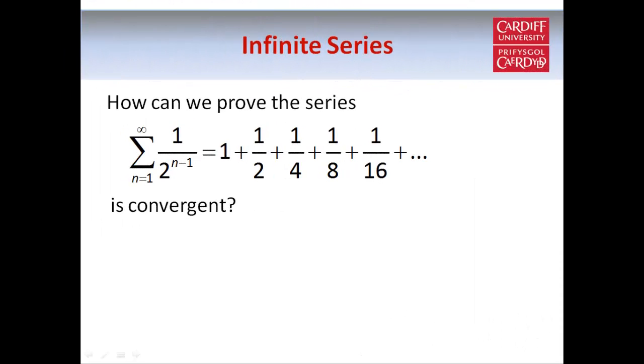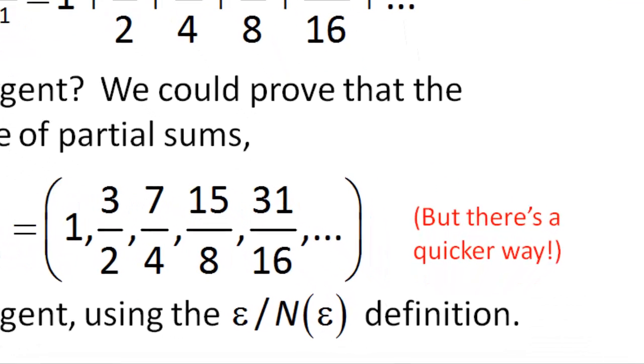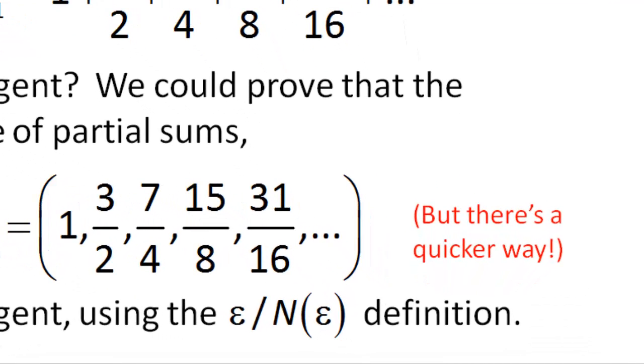So the question is, how can we prove that our series 1 plus a half plus a quarter etc is convergent? Well, as we've seen, if we know that the sequence of partial sums is convergent, that means the series is convergent. So we could try to prove that the sequence of partial sums is convergent using the definition of a convergent sequence, in other words using the epsilon and n of epsilon notation that we saw when we were talking about limits of sequences. But in many examples involving series, you'll be glad to know that there are certain shortcuts we can use so that we don't actually have to write out formal proofs in order to determine whether or not a series is convergent.